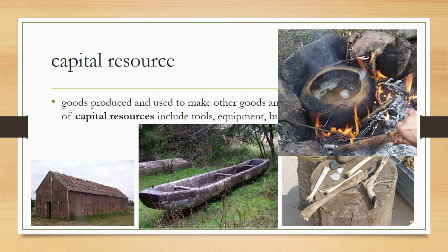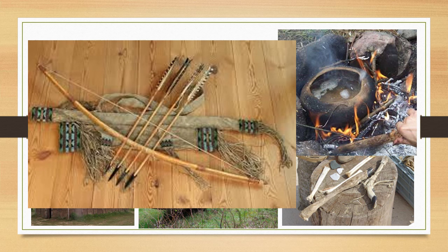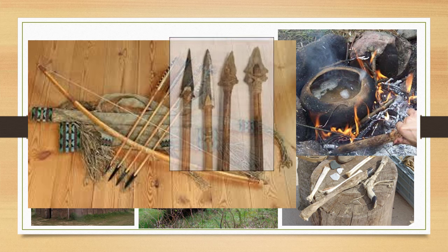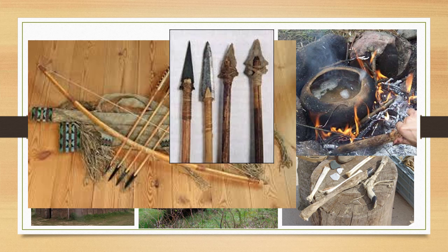Capital resources also could include this pot that is put in the fire and used to cook the stew that Native Americans might have made for their family. This bow and arrows are capital resources that would have been used as a tool for hunting. And these arrowheads — the tips of the arrows — are again a capital resource used for the hunting required for survival in Native American life. These are all capital resources.